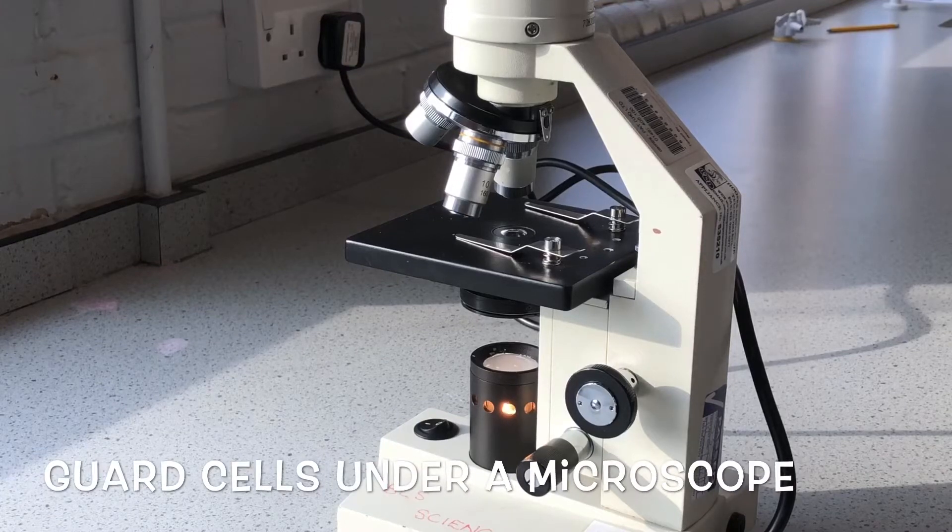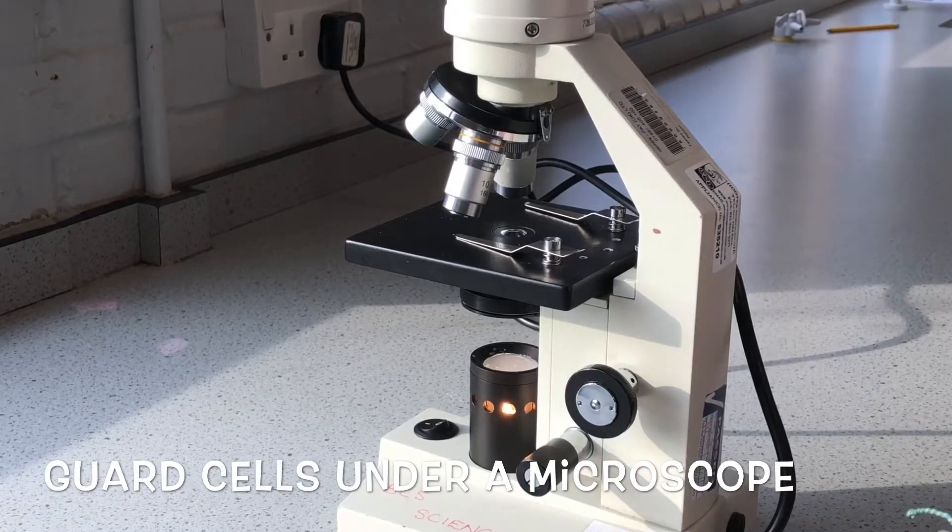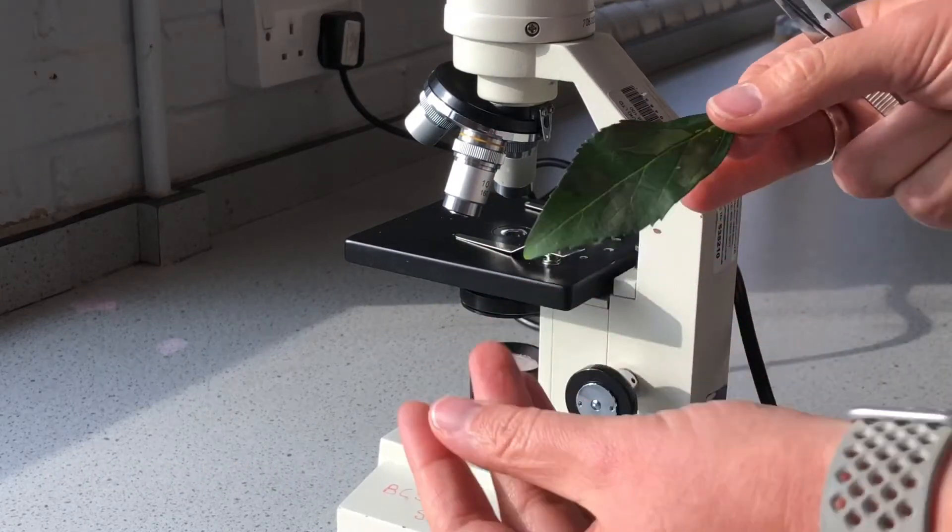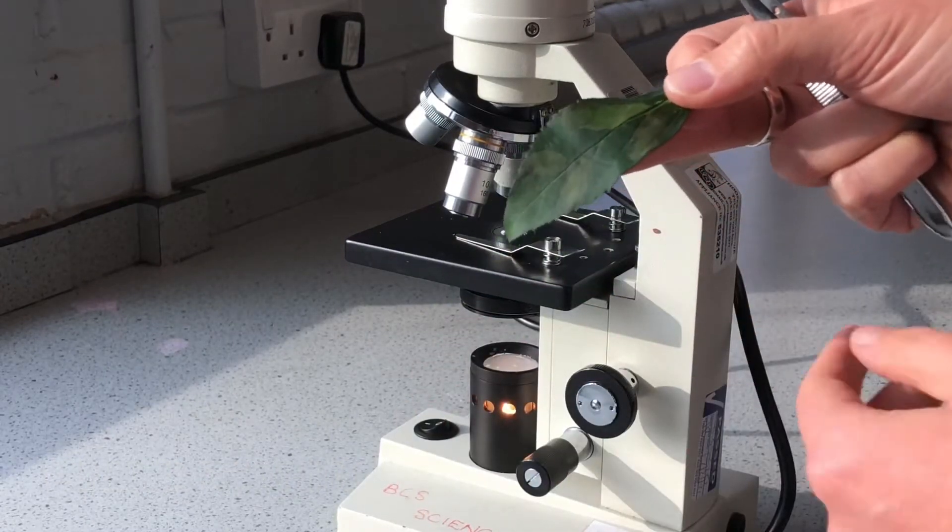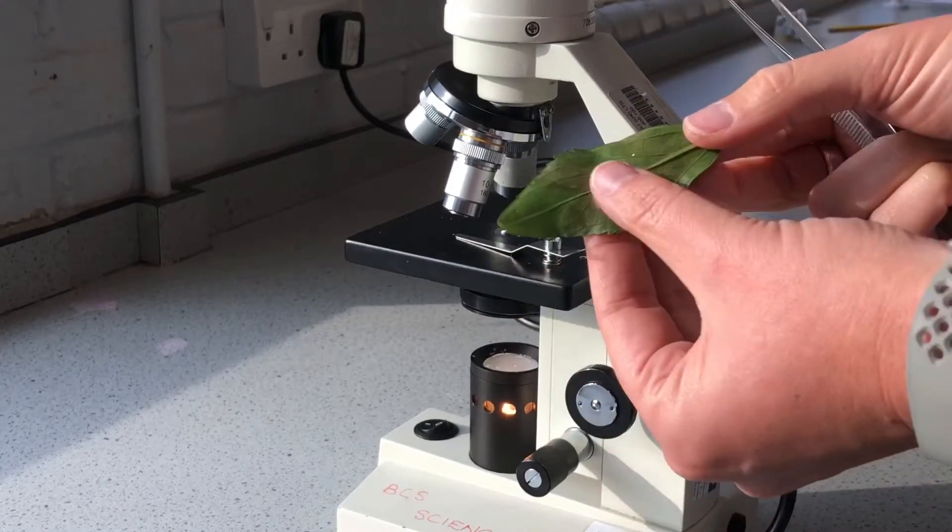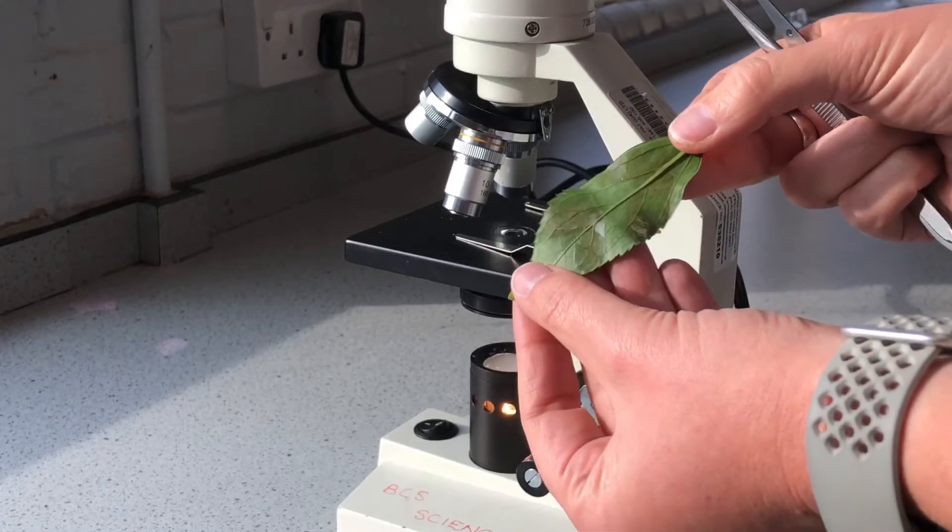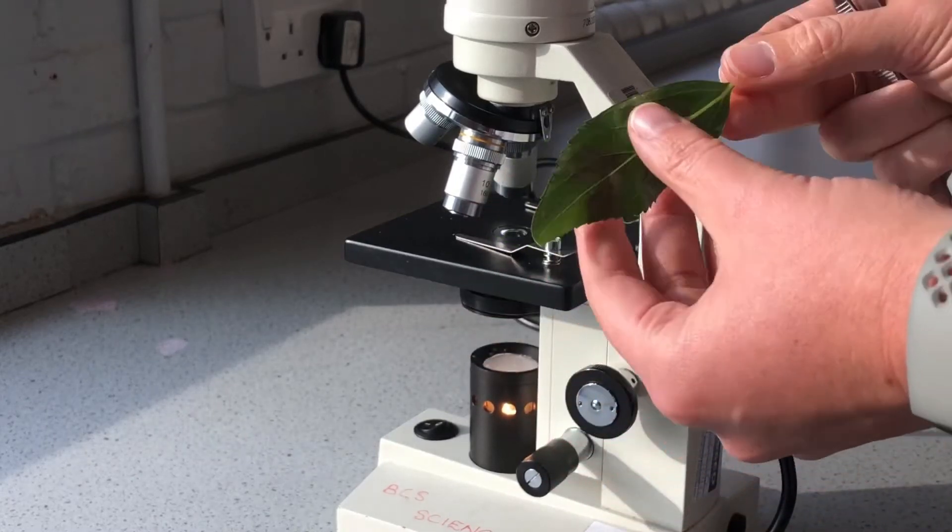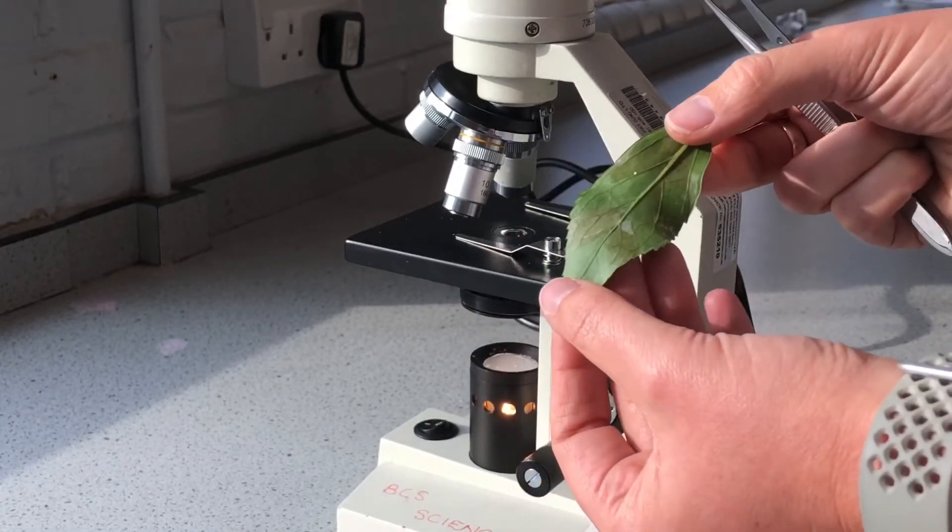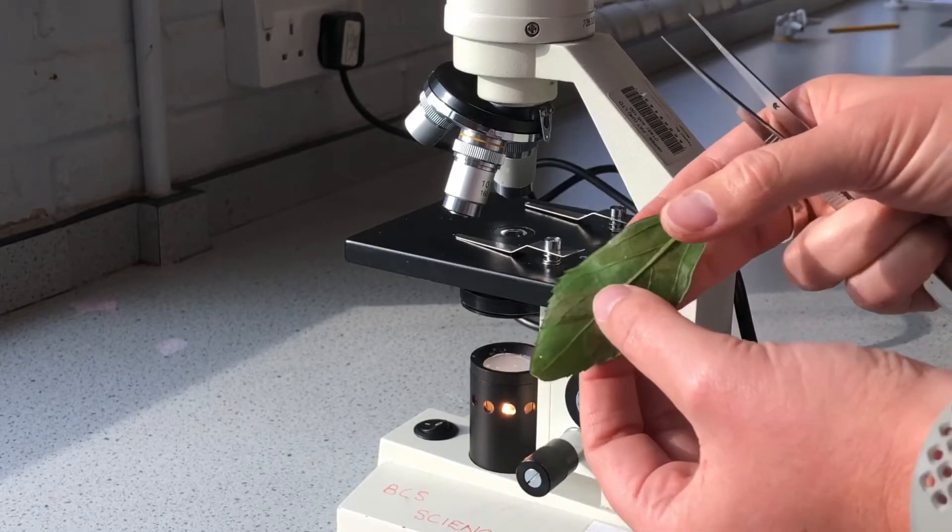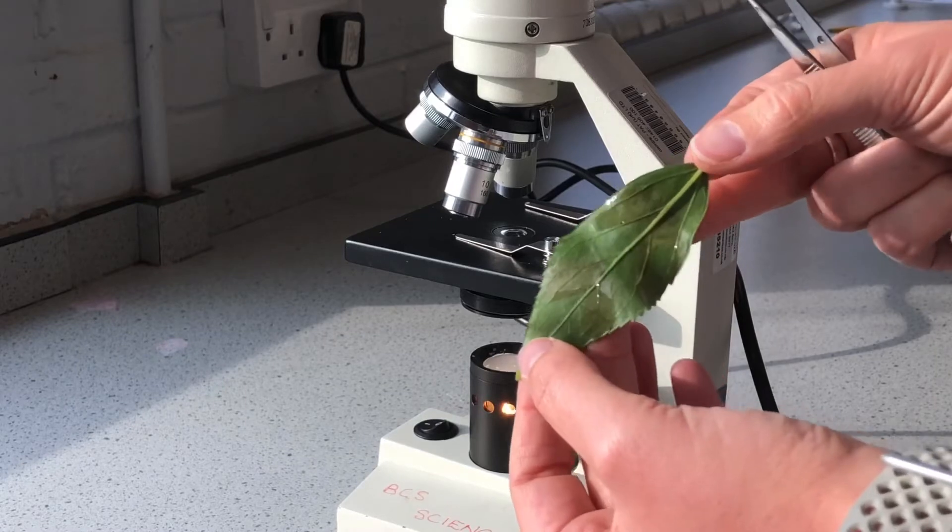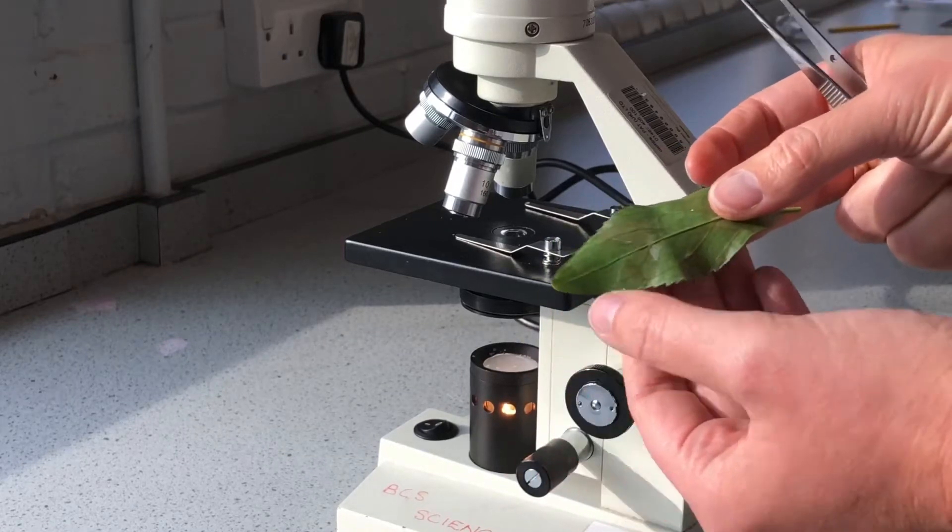In this video we're going to look at guard cells from the underside of a leaf. The waxy cuticle on the top of the leaf prevents water loss, and underneath we've got the guard cells which work in pairs guarding the stomata. The stomata are there for gas exchange; their primary purpose is gas exchange. However, if the guard cells enable the stomata to be open, there will be water loss as well by evaporation.